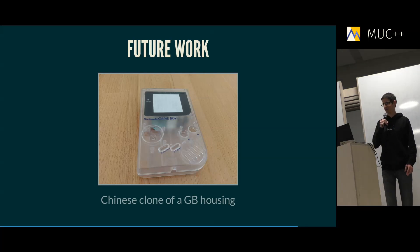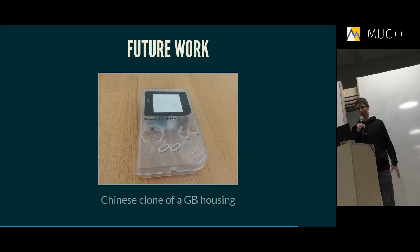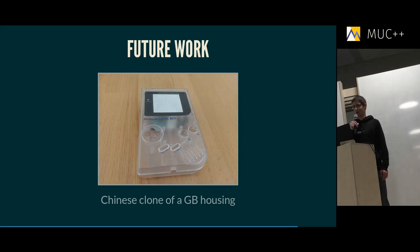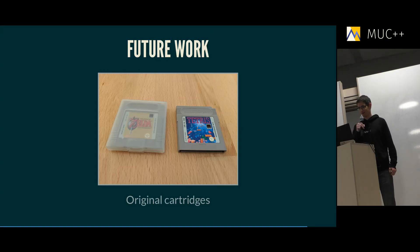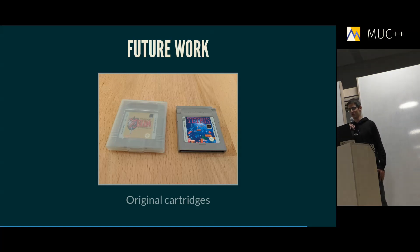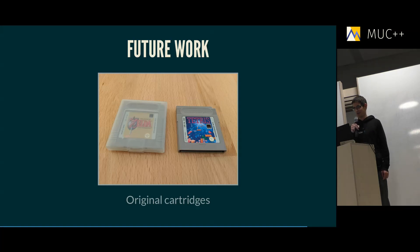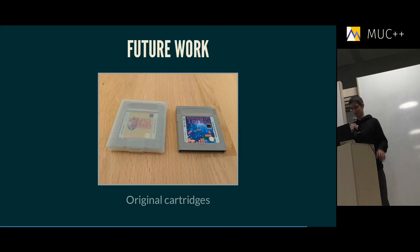For future work, I want to integrate this into an actual Gameboy housing — I bought a Chinese clone whose quality is actually really nice and quite cheap. I also bought original games because I want my hardware to run them. Tetris on the right you can buy cheaply for about one euro since it was shipped with every Gameboy and there are hundreds of millions of copies around. Other games like Zelda are quite rare and expensive — I paid around 30 euros for that.